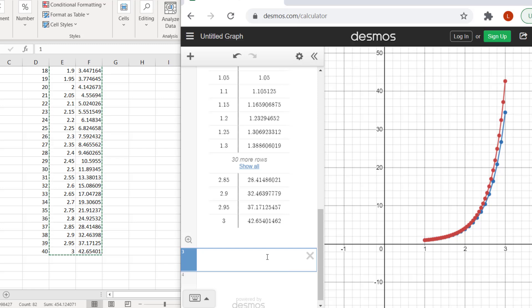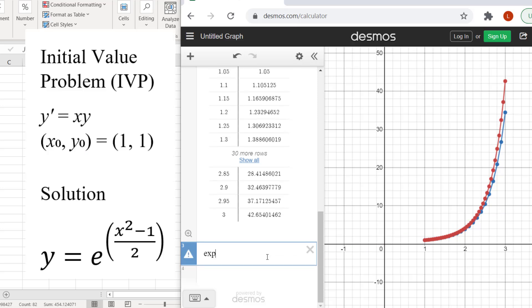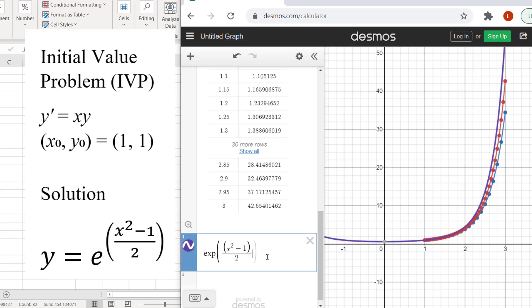Now in the third line of the Desmos window, type in the formula for the exact solution. y equals e, which is exp for exponential, to the power x squared minus 1 over 2. We can use a caret, or shift 6, to get an exponent and then use the right arrow key to get out of the exponent for the minus 1. I want this curve to be green.